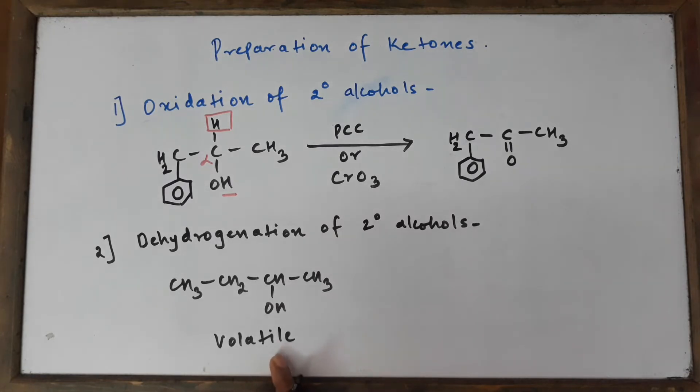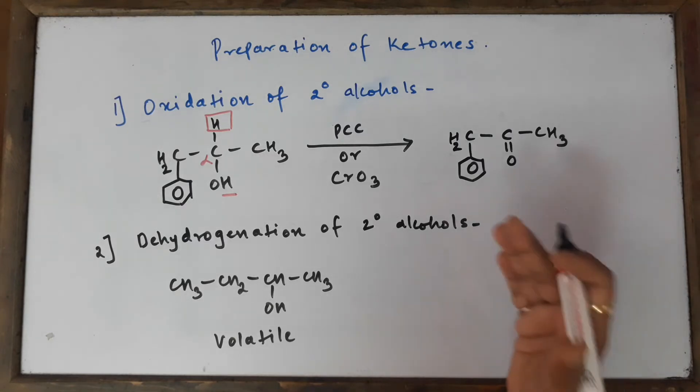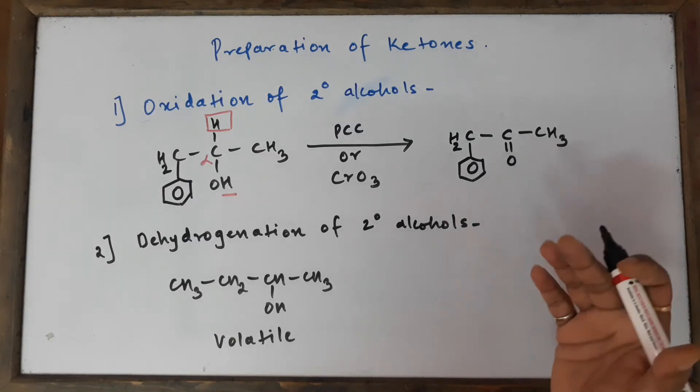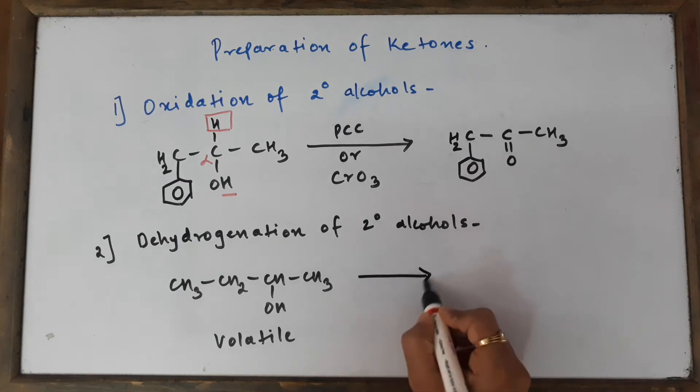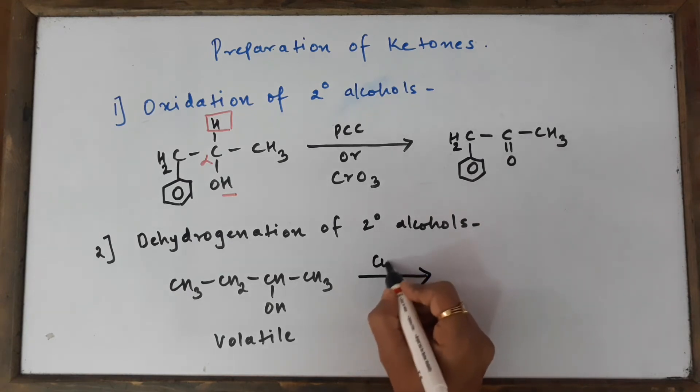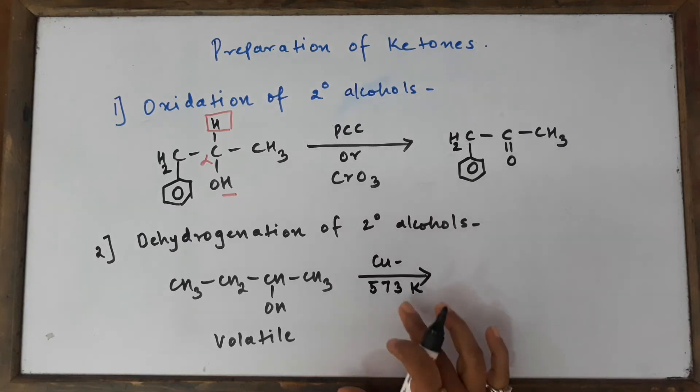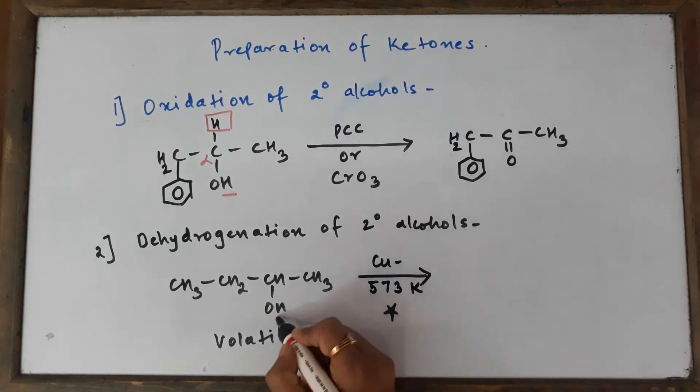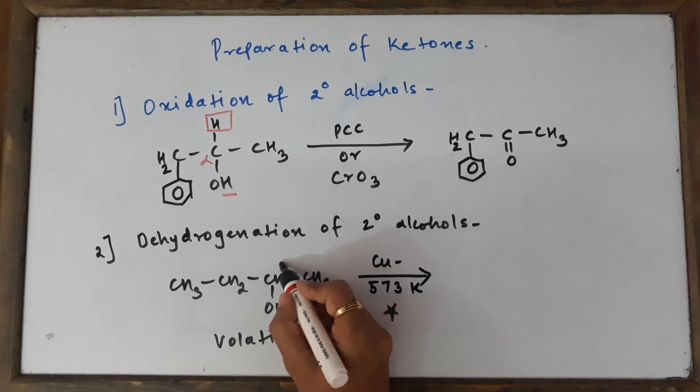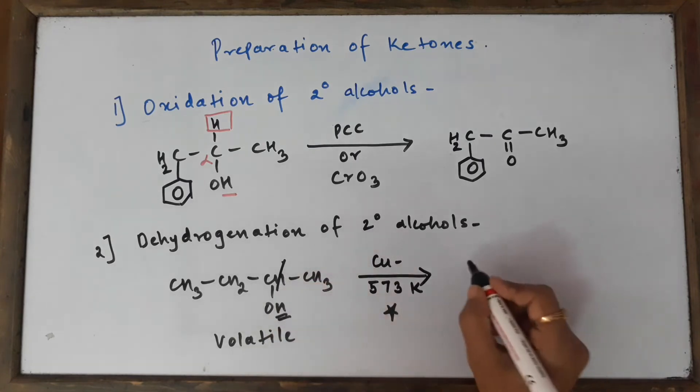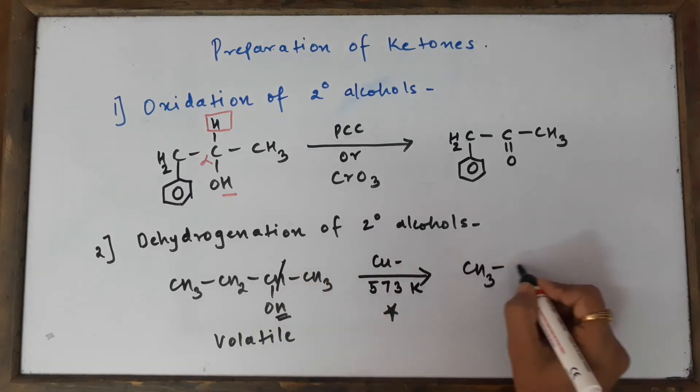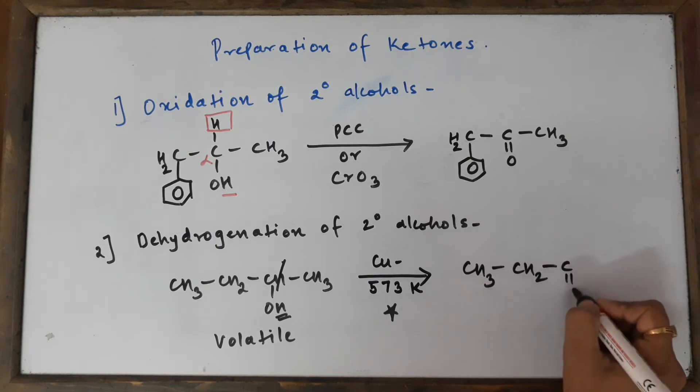This method is only suitable for volatile alcohols which have a very low boiling point—less than 100 degrees Celsius. The reagent is copper at 573 Kelvin. This is important to remember in exams. Same mechanism: we are going to knock out the hydroxyl H and the alpha H, and we get a secondary alcohol converted to a ketone.